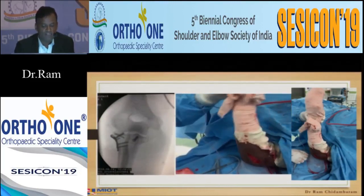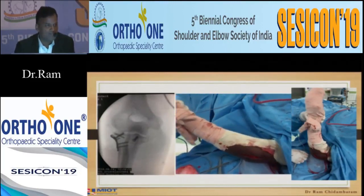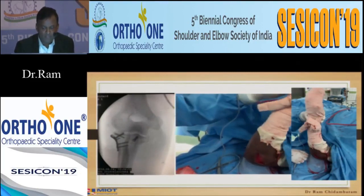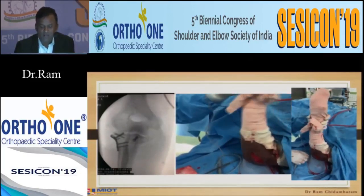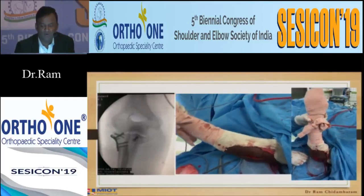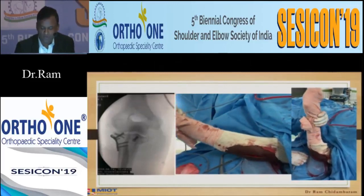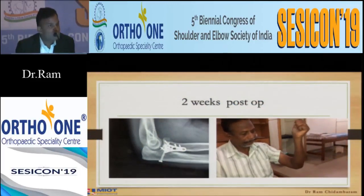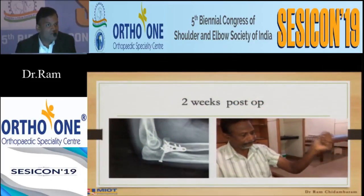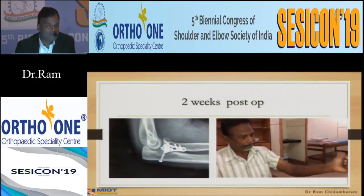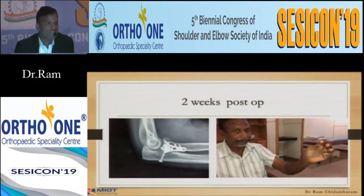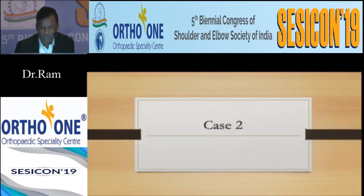The coronoid was also fixed from posterior to anterior. That is the range of movement on the table. I mobilized them straight away — in two days' time. You can see supination and pronation of the forearm. The coronoid is fixed from posterior to anterior after reduction. The radial head is repositioned and fixed with plate and screws. That is the range of movement at two weeks post-op on this patient who was operated two weeks ago.